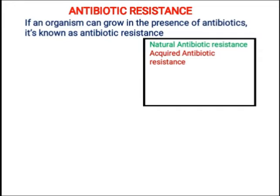اس beta-lactamase enzyme نے beta-lactam ring of natural penicillin کی breakdown کی تھی، جس کی وجہ سے وہ specific بیکٹیریا جن کے پاس beta-lactamase enzyme موجود تھا، وہ resistant ہوگئے تھے against natural penicillin۔ جس کی وجہ سے scientists نے پھر beta-lactamase resistant penicillin بنائی۔ This is the example of acquired antibiotic resistance.